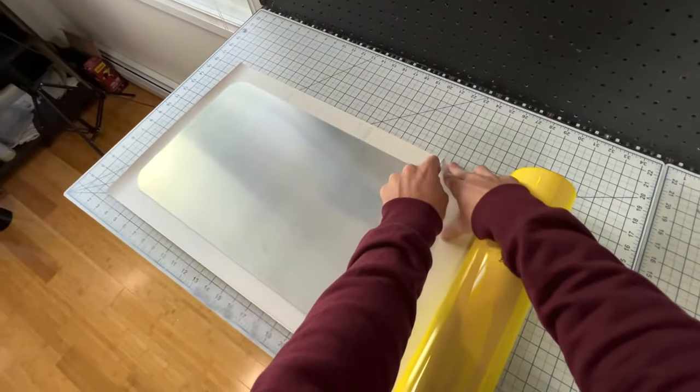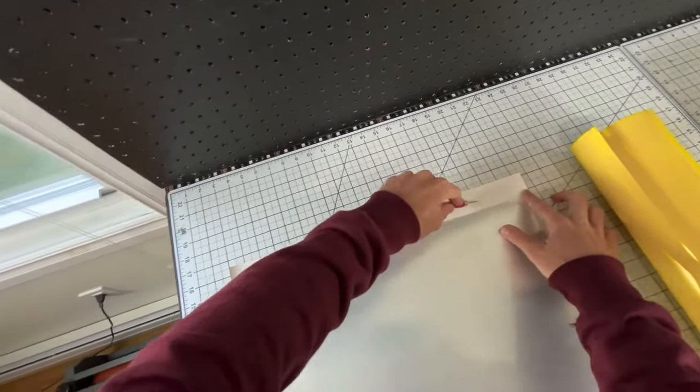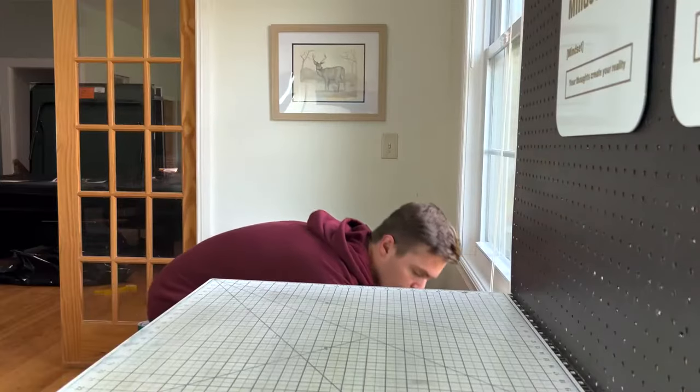So as you can see we're going to cut the vinyl out so that it matches similar to the size of the sign we're going to put it on. This just makes it easier when I put it through the roller so there's no excess vinyl hanging off. It doesn't get all wrinkled and stuff.